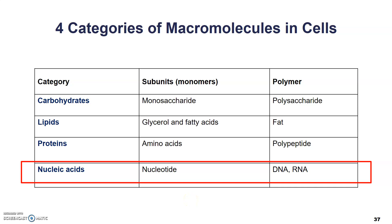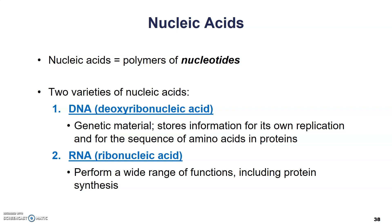The final category of macromolecules we're going to discuss are the nucleic acids. Nucleic acids are the polymers of a subunit or monomer called nucleotides. There are two different varieties: DNA, or deoxyribonucleic acid, and RNA, or ribonucleic acid. DNA is the genetic material that stores all of the genes and genetic information necessary to replicate itself and to encode all of the amino acids that make up all the proteins in a cell and an organism. RNA performs a wide range of functions as well, including several functions in protein synthesis or translation.